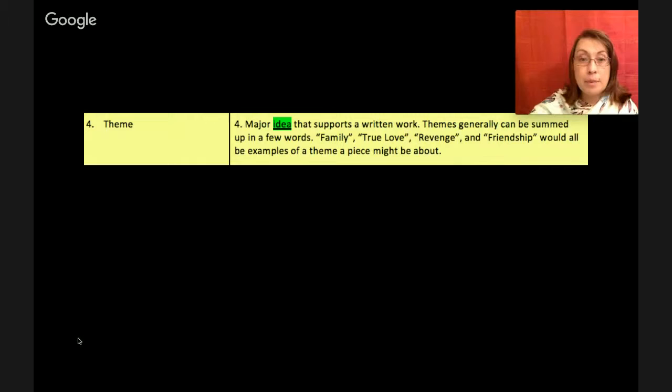Number four is theme. Theme is a major idea that supports a written work. Themes generally can be summed up in a few words. Ideas like family, true love, revenge, friendship. These would all be examples of themes in a piece might be about. So for example with family, it could be family is more important than friendship. With true love, it could be true love can be painful. Revenge, it could be revenge doesn't always turn out the way you want it to. It's like what you'd find in a fortune cookie or Hallmark card. It's just a quick idea. What's the lesson that the story is teaching?